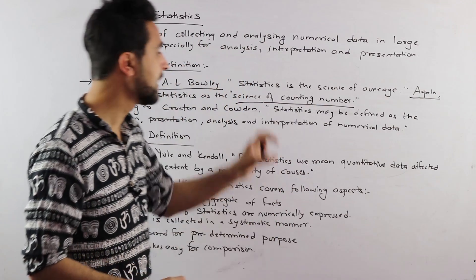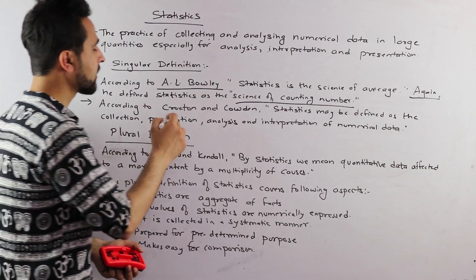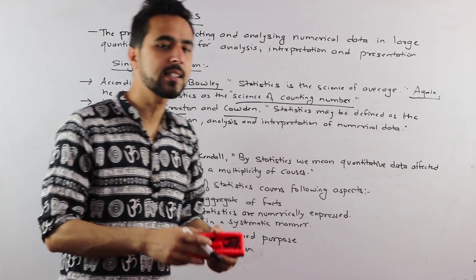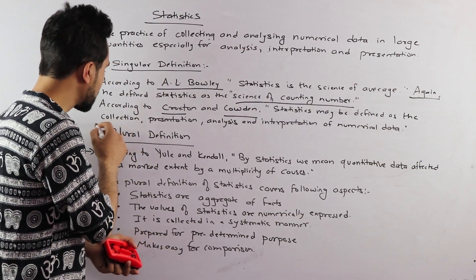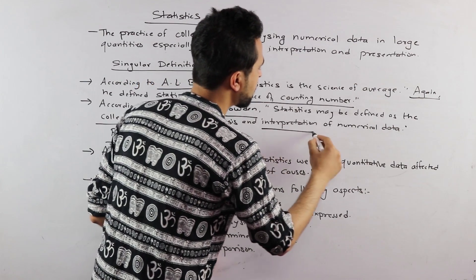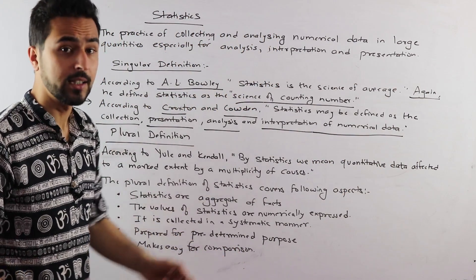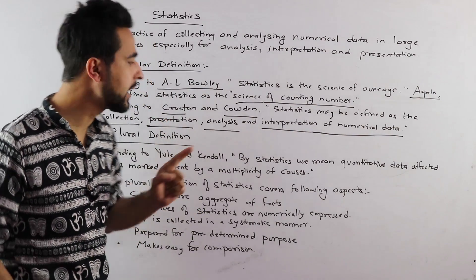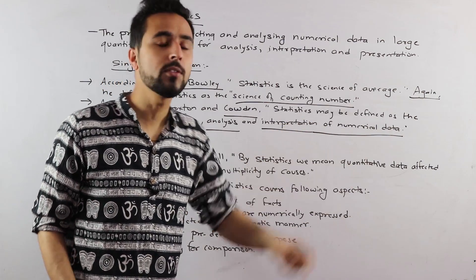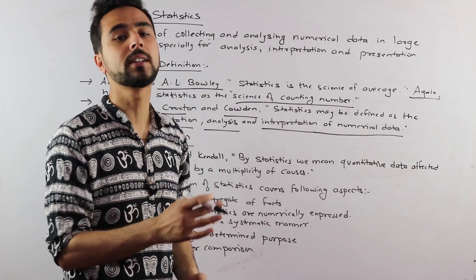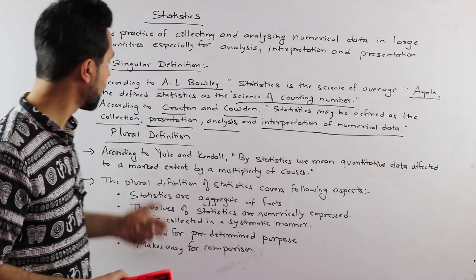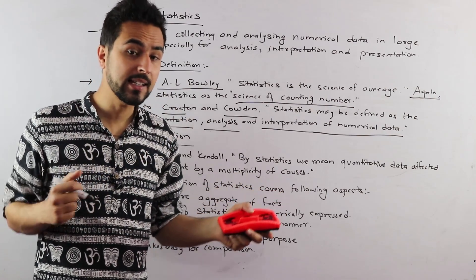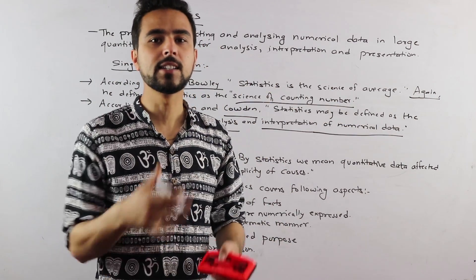According to Croxton and Cowden, statistics may be defined as the collection, presentation, analysis, and interpretation of numerical data. Collection of data, presentation of data, analysis of data, and interpretation of data — the data involves numerical numbers. After collection, you do presentation, then analysis, and finally interpret to get the conclusion.